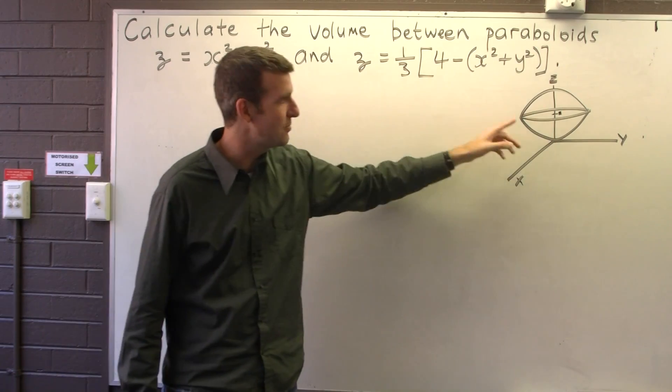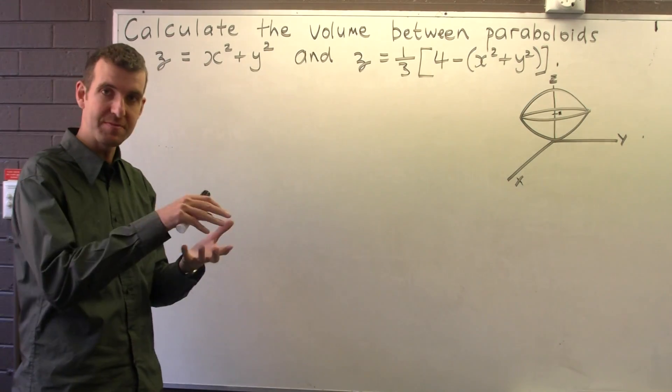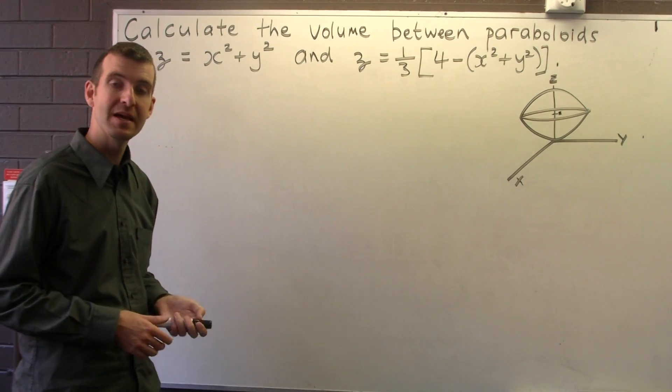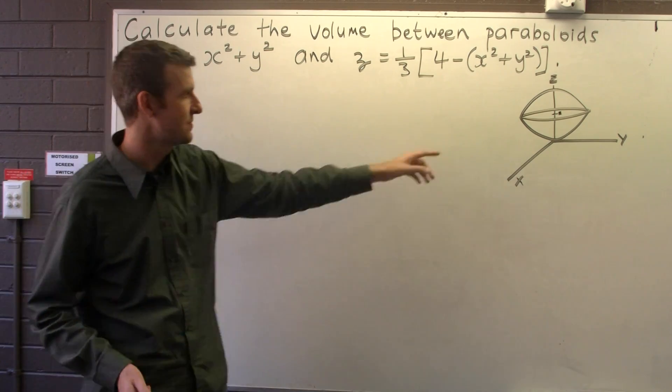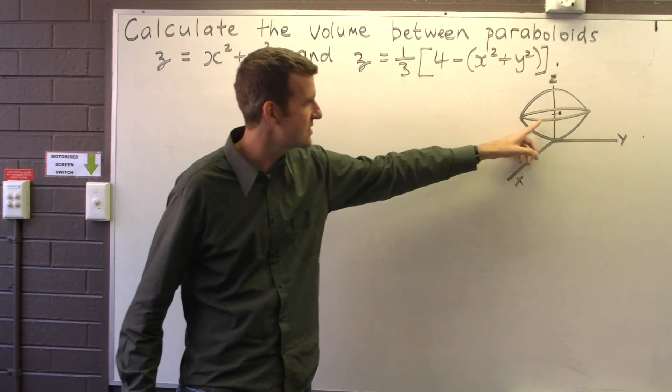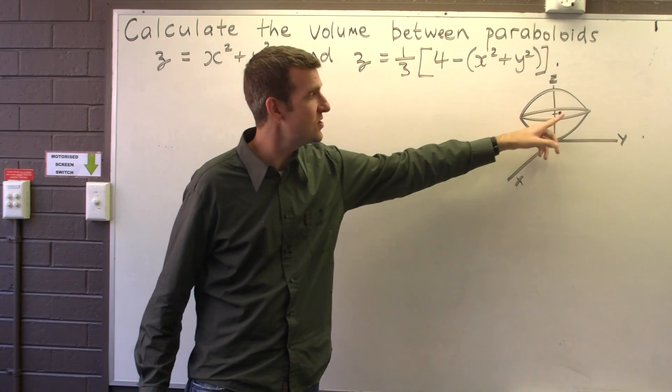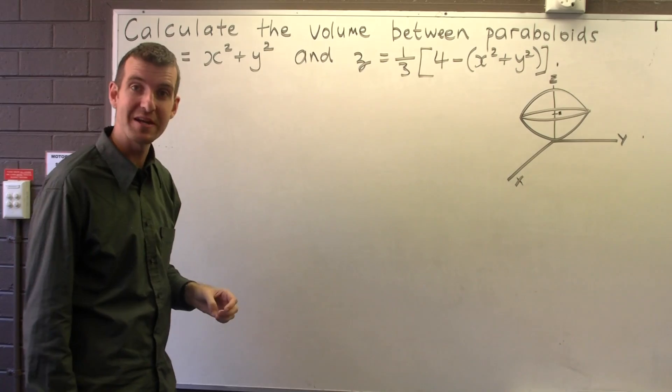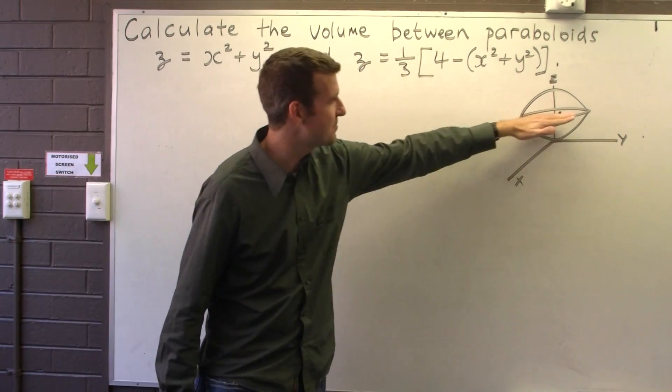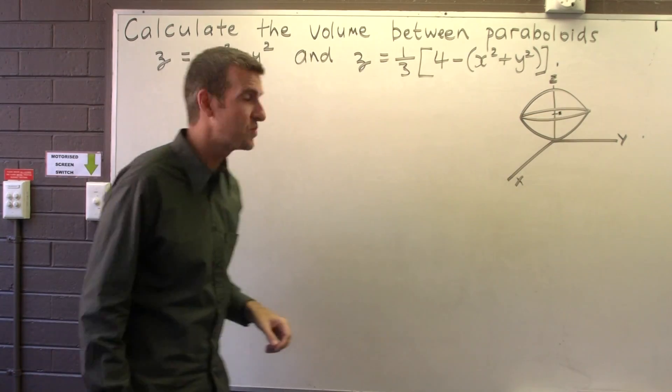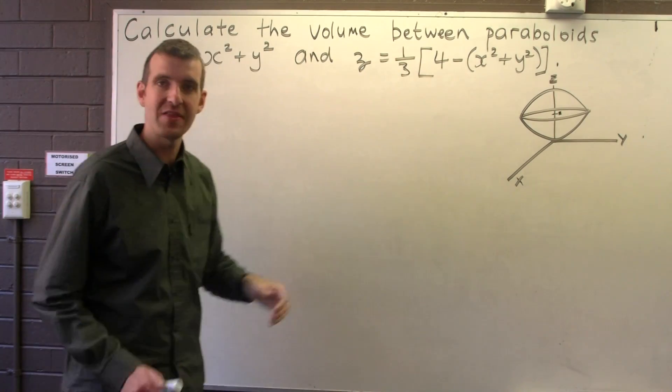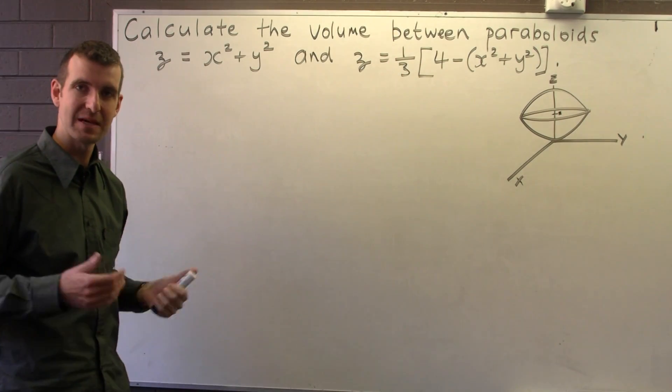I drew the top paraboloid separately, then put them together and looked for their curve of intersection. Their curve of intersection occurs here, and this is just the circle x squared plus y squared equals 1, and it lies in the plane z equals 1. All I did to do that was put one equation into the other and get some equation involving x and y.